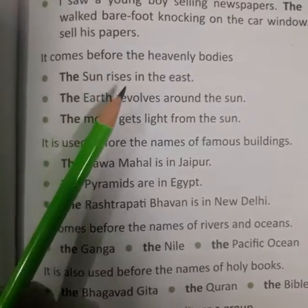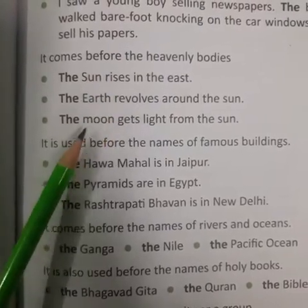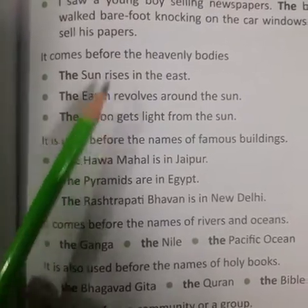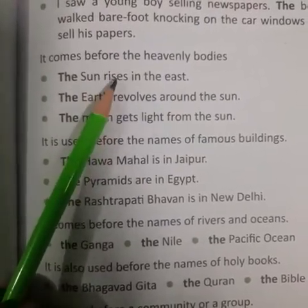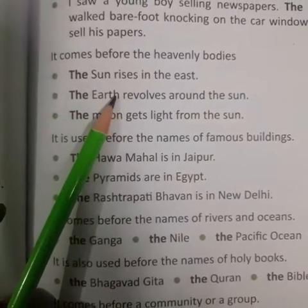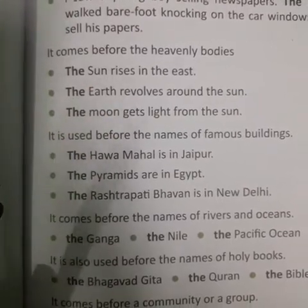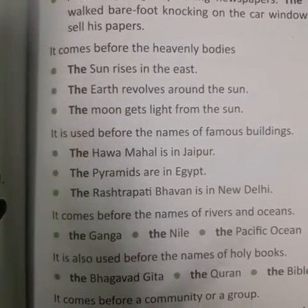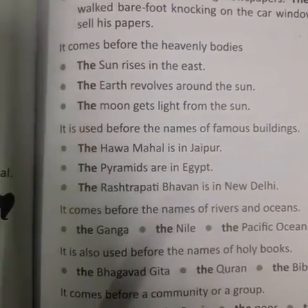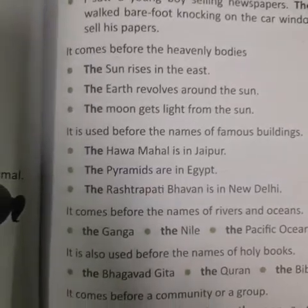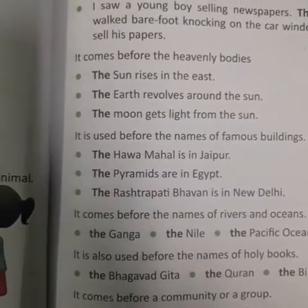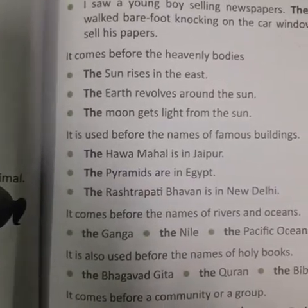It comes before the heavenly bodies — the sun, the earth, the moon. Jo cheezein individual hoti hain, sun is only one, earth and moon are only one — inke saath 'the' ka use hota hai.